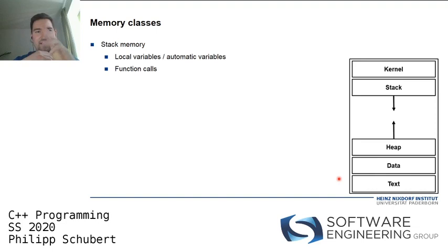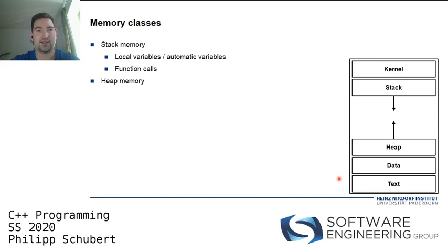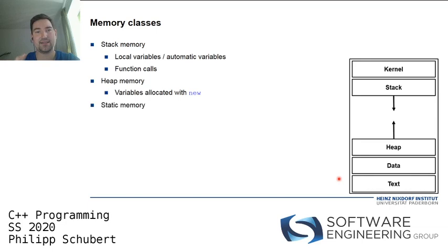The stack memory also manages function calls. We also have the heap segment — whenever you allocate memory using the new operator, it is allocated on the heap. And then we have static memory, which we'll talk about in detail today.